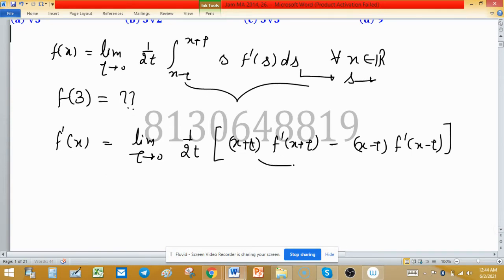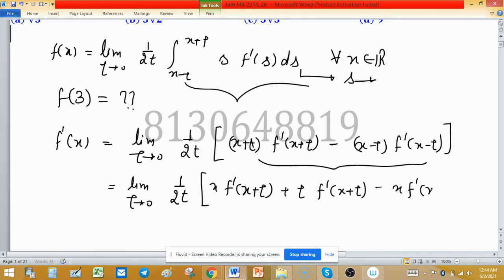So we obtained this one from Leibniz rule. Now we do a simple calculation here. Some manipulation to form some specific formulas or structure. So x f'(x+t), just apply distributive law here. So this one, t f'(x+t), minus x f'(x-t), and minus minus turns to positive t f'(x-t). Square bracket closed.